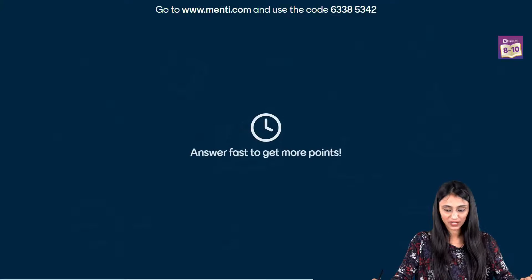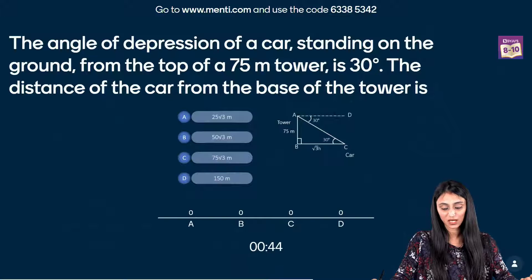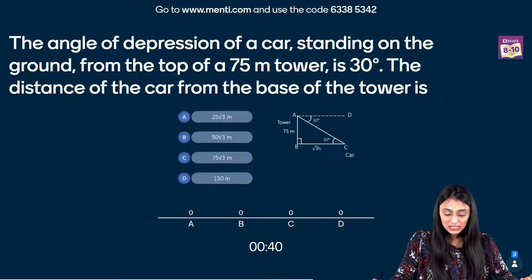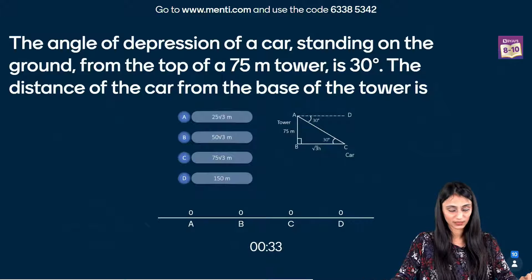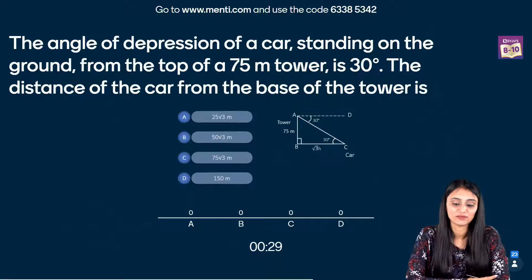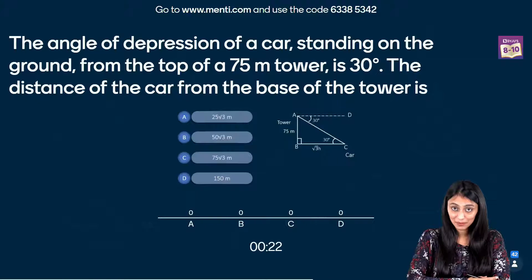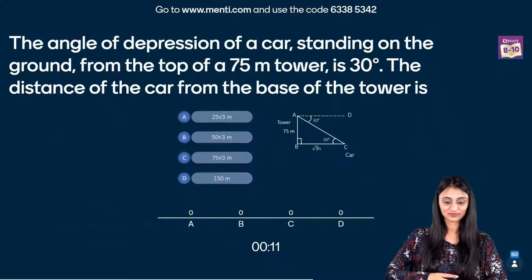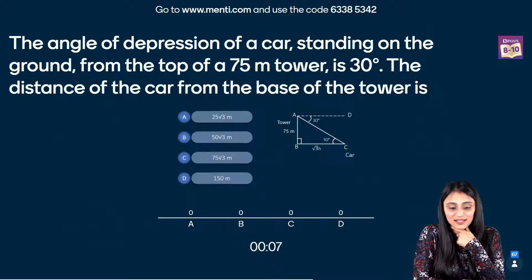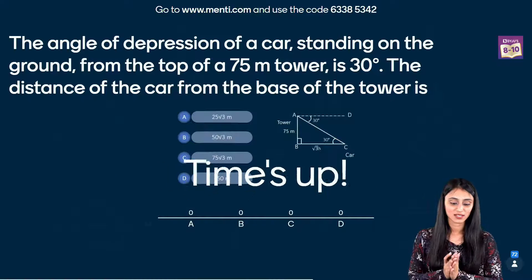So we have question number 5 here. The angle of depression of a car standing on the ground from the top of a 75 meter tower is 30 degrees. The distance of the car from the base of the tower is? You can see a figure is drawn over here, right? And you have to find the distance of the car from the base of the tower. A simple one. Vibhav, speed doesn't matter, accuracy. Yes, accuracy does matter but when you will appear for your exams, in that case, time management. Speed is also important. So you need to work on that as well. Pragya, mis-clicked again. Oh, yes. I can see that answer that started coming up. Okay, okay, okay, time is up. All right.